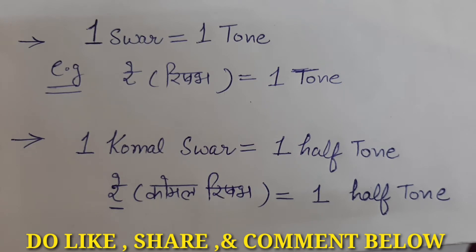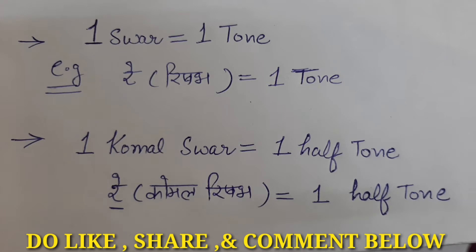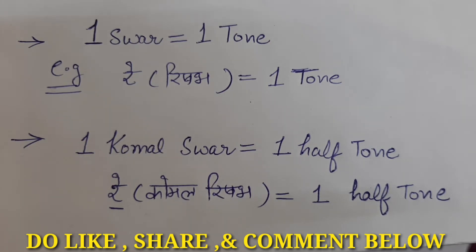For example, Sa is one svar — it is one tone. Re is one svar — it is one tone. As shown in the example written in front of you, Re (Rishabh svar) is equal to one tone. A komal svar (flat note) is equal to one half tone or one semitone. For example, Komal Re (Komal Rishabh) is equal to one half tone or one semitone. Half tone and semitone are the same things.